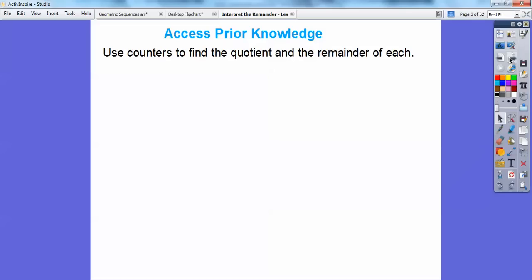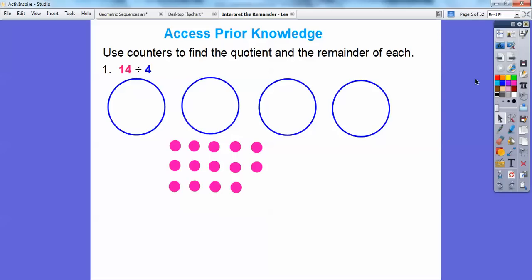Here we're going to use counters to find the quotients and the remainder of each. So 14 divided by 4. Remember in the last lesson we made four circles, and we would have done 14 different counters. So one goes there, one goes there. Remember doing this in the last one, so how many can we fill up that's even in each one of these, and then there'll be a remainder.